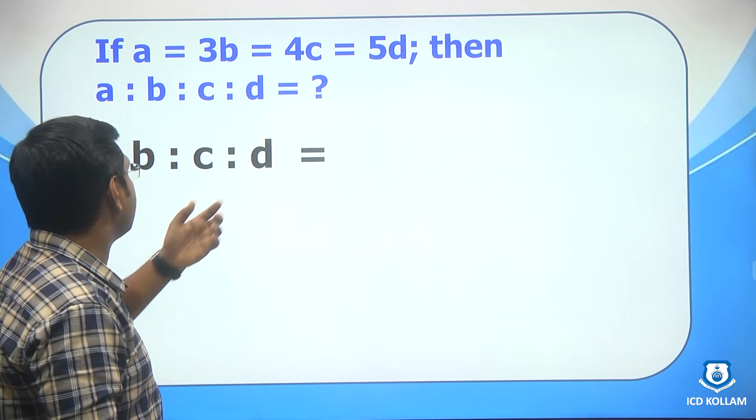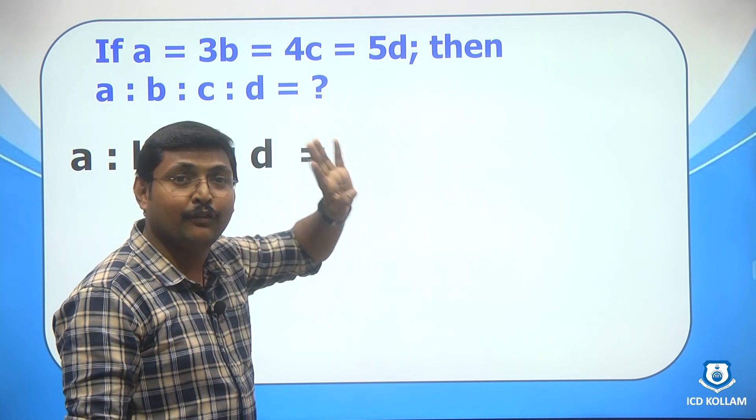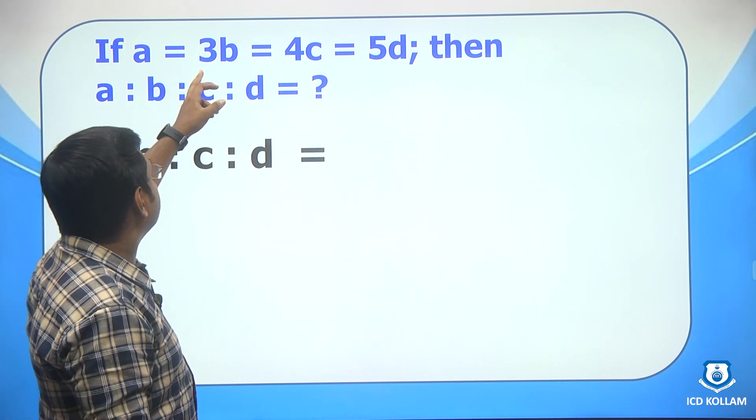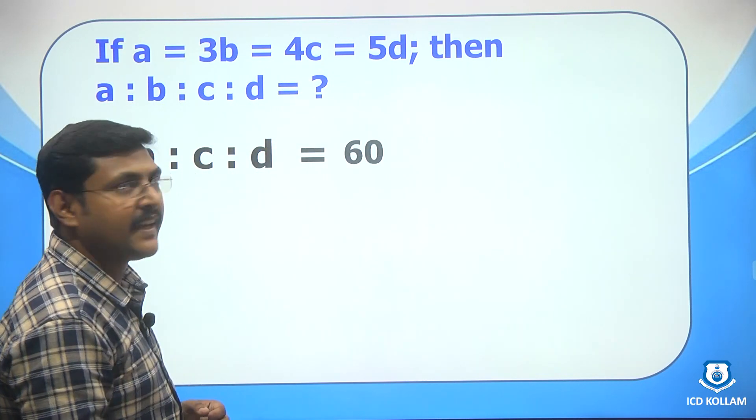Similar to the previous question, to find a we need to consider the coefficient of the other three since four variables are there right. So 3 into 4, 12, 12 into 5, 60. So a is 60.